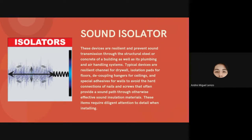Sound isolators are resilient devices that prevent sound transmission through the structural steel or concrete of a building, as well as its plumbing and air handling systems. Typical devices include resilient channel for drywall, isolation pads for floors, decoupling hangers for ceilings, and special adhesives for walls — to avoid the hard connections of nails and screws that provide a sound path through otherwise effective sound insulation materials. These items require diligent attention to detail when installing.